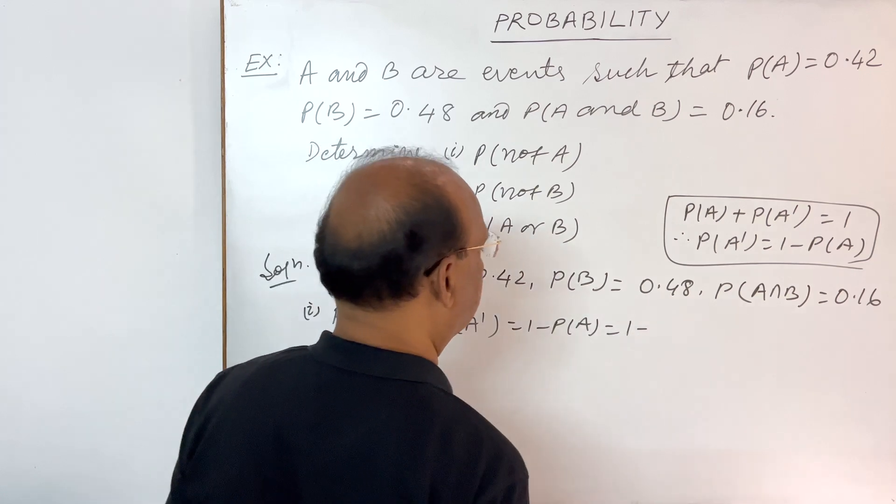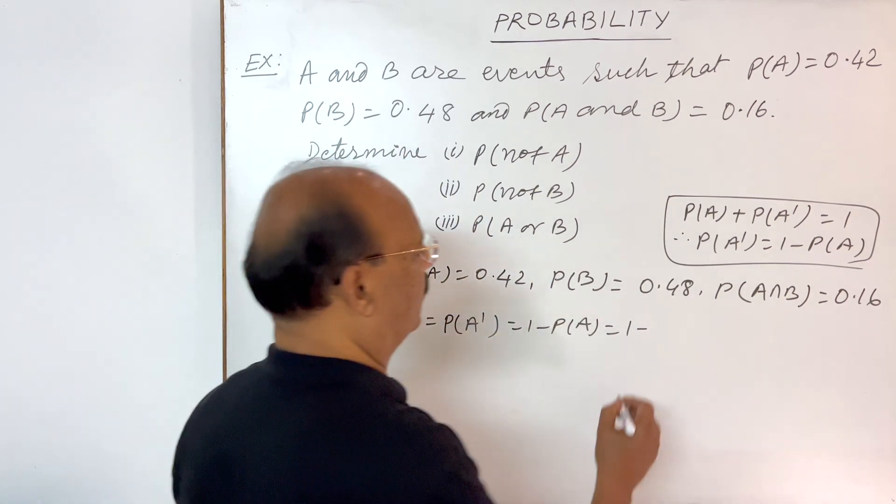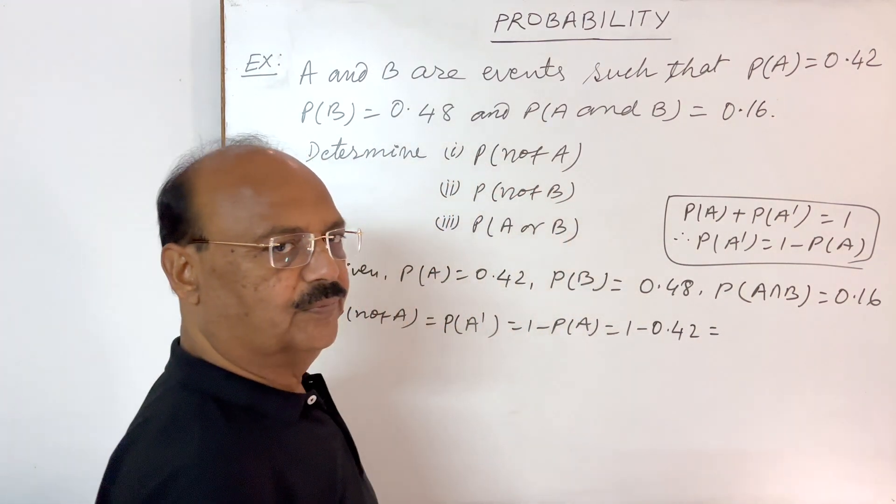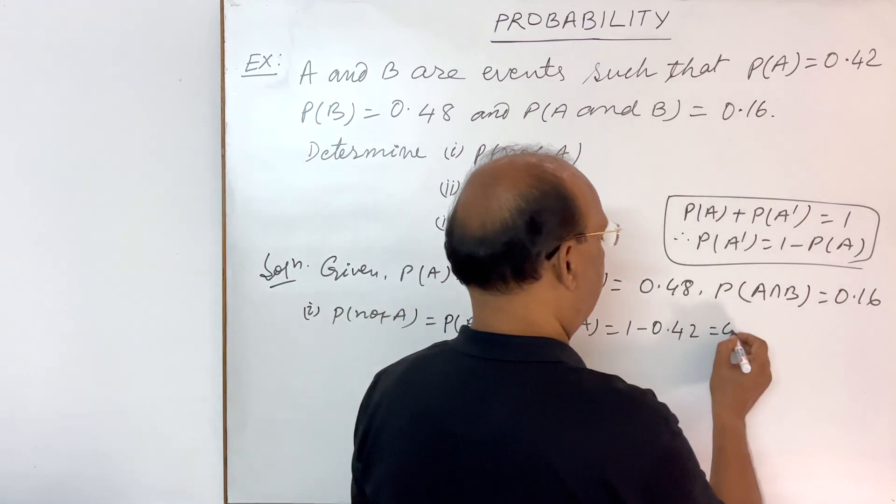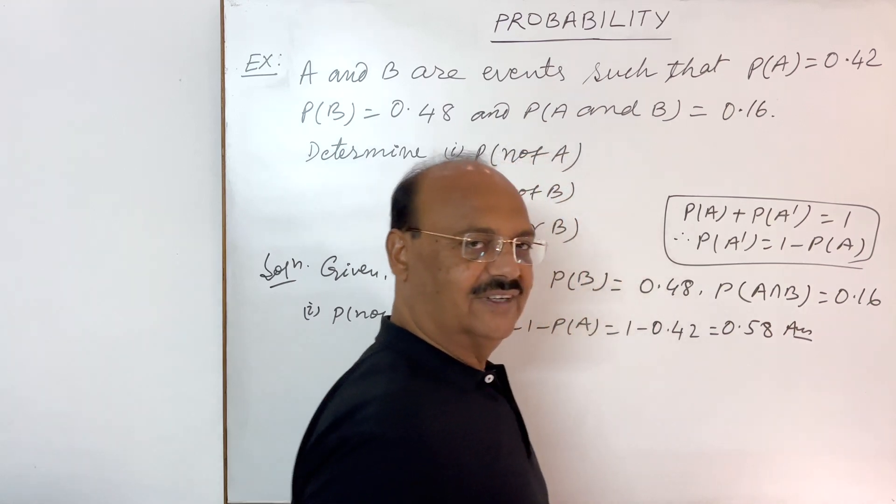So this can be written as 1 minus probability of A. This is 1 minus, probability of A is given here, 0.42. So this will be equal to 0.58. This is the answer.